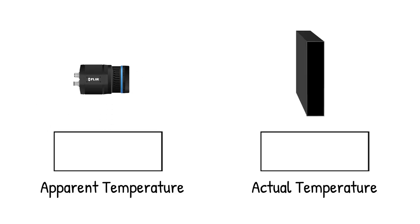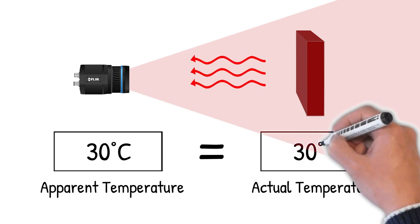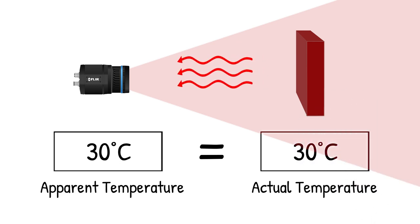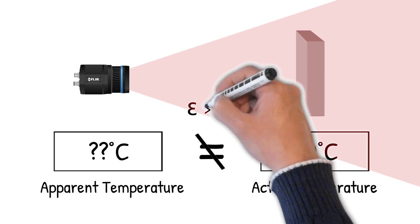When using infrared cameras to measure temperature, the objective is to make the reported apparent temperature as close as possible to the actual temperature of the target. In reality, the objects we are likely to measure are not perfect blackbodies and will have emissivity values less than 1.